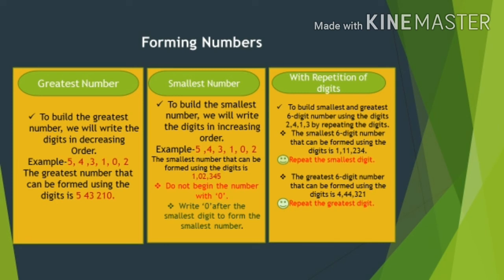To form the smallest six-digit number using the digits 2, 4, 1, and 3, we will repeat the smallest digit, which is 1. So the number will be 1,11,234 — that is, three 1s first, then 2, then 3, then 4, because the digits must be arranged in ascending order.